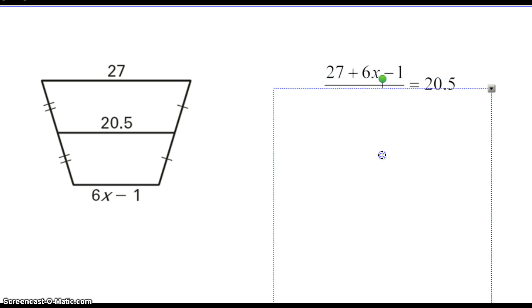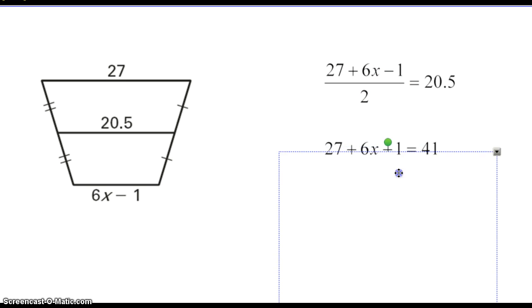So the way I'm going to set this equation up, and this happens to be one of the harder problems, here's the concept. I'm going to take the top base and the bottom base, and I'm going to add them together, and I'm going to divide by 2. That's an average. That average will give me the mid-segment. So algebraically, the first thing we're going to do is get rid of the 2. So I'm going to multiply by 2, so I get 27 plus 6x minus 1 equals 20.5 times 2 is 41.